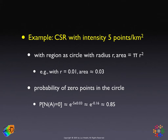Looking ahead, in some of the nearest neighbor statistics we'll want to know the probability that there is a nearest neighbor within a given distance. We estimate that by taking the complement of the probability of not having any points in a circle. For example, if R is 0.01, the area is roughly 0.03, giving us e to the minus 5 times 0.03, roughly 0.85 — meaning an 85% probability that there would be no points in a circle with a radius of 0.01, given an intensity of 5 points per square kilometer.